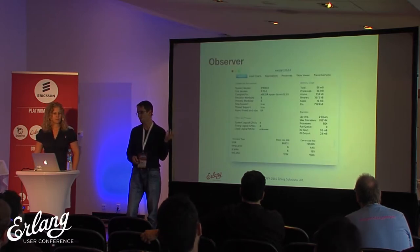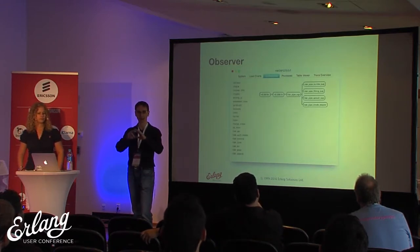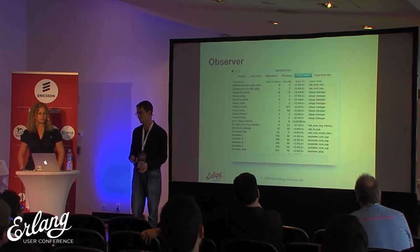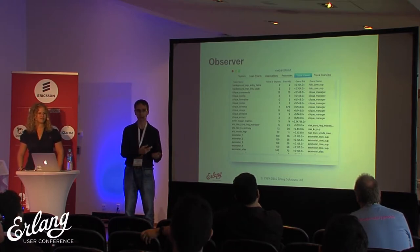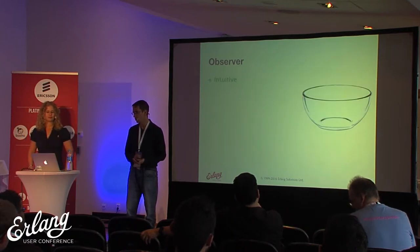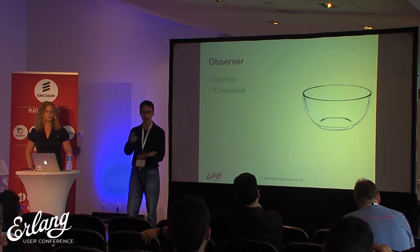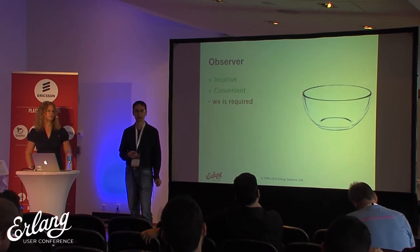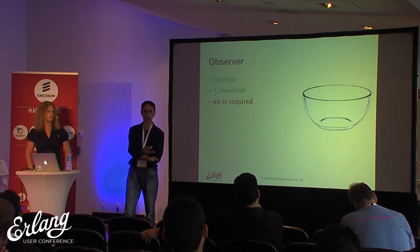This is how Observer looks. You get some basic system information, resource utilization, processes drawn into nice trees that you can click on for more information, an ETOP-like process listing, information about the ETS and Mnesia tables, and even some tracing information. It's intuitive to use like most graphical tools — its main advantage is that you can just start it and click around. But the biggest problem is that it requires a WX graphical library, and often when you have a Linux server running your Erlang code you don't have any graphical libraries installed.